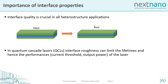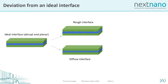It is well known that interface quality is crucial in all heterostructure applications, and in particular in quantum cascade lasers, interface roughness can limit the lifetimes and degrade the performance, such as the gain and output power of the laser. The basic question is how a real interface deviates from an ideal one.